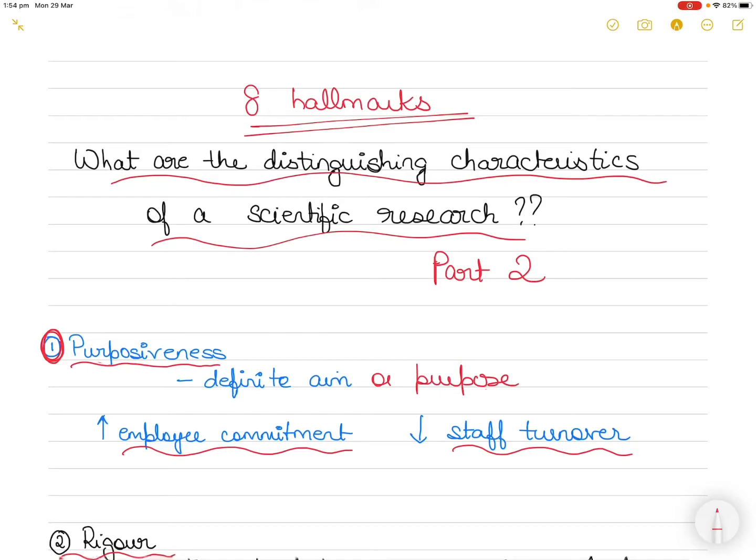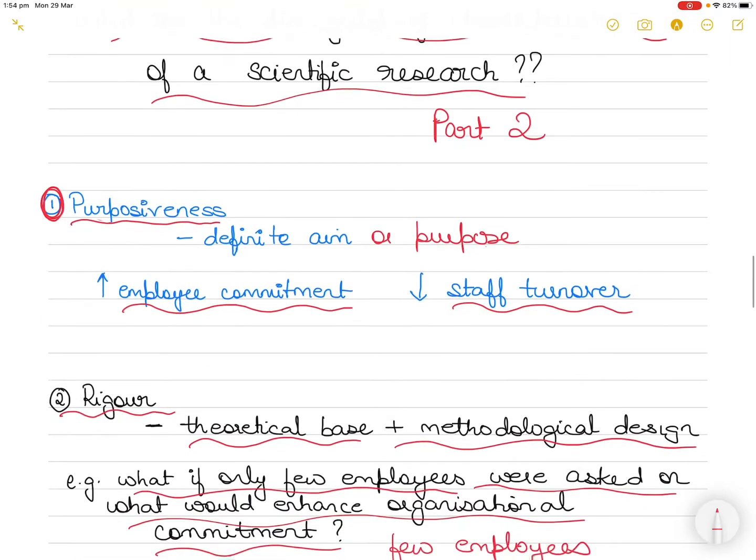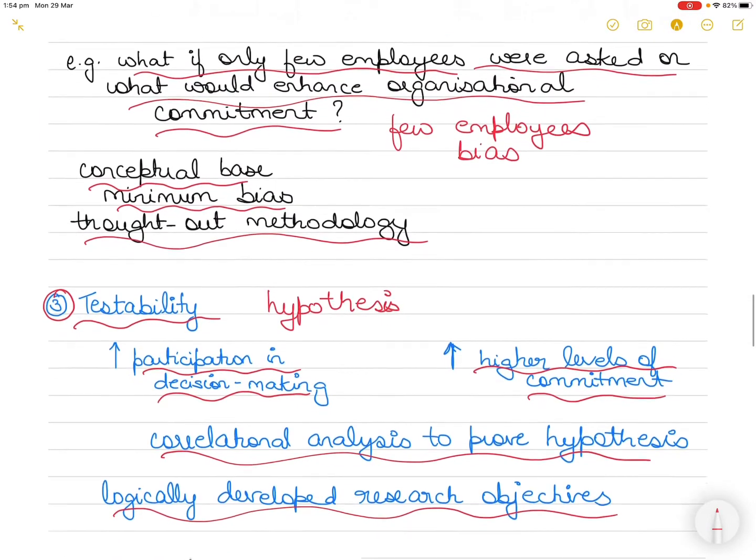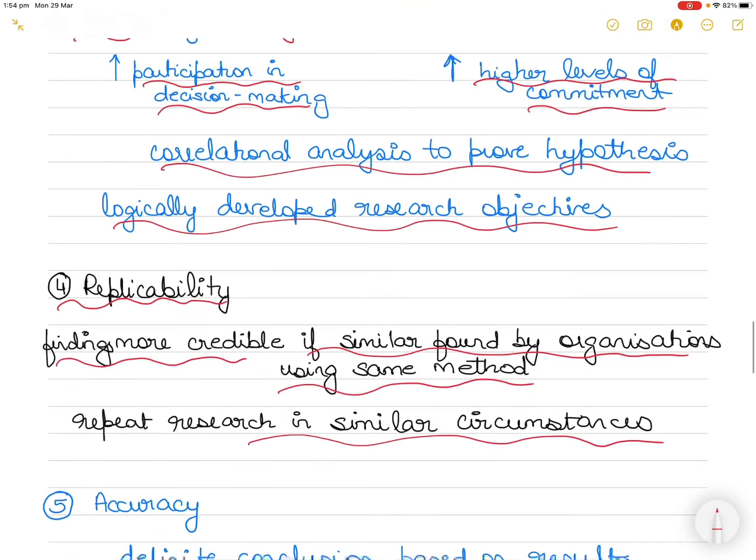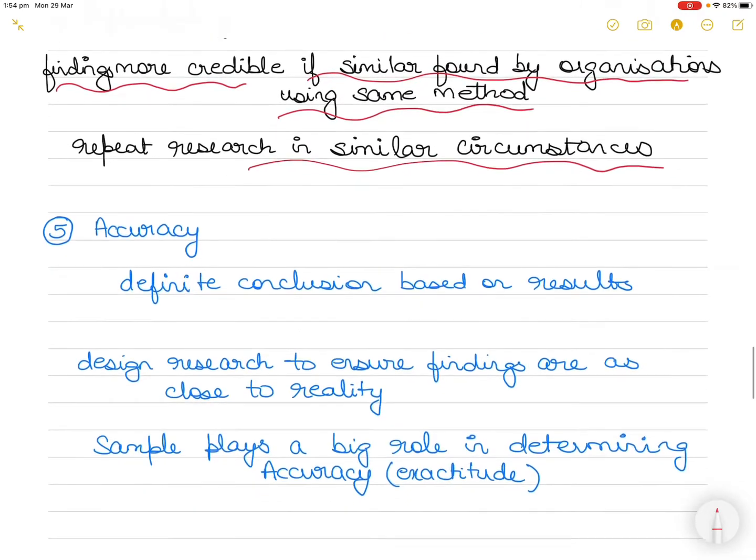The first four characteristics were purposiveness, rigor, testability, and replicability. I was using the same example to explain each point - a researcher trying to investigate what would increase employee commitment to the organization.